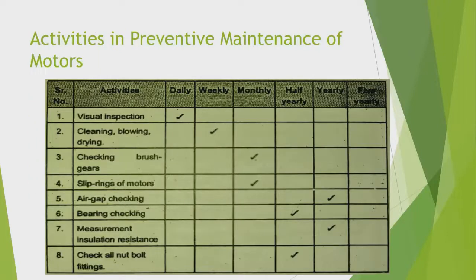Activities in preventive maintenance are scheduled as daily, weekly, monthly, half-yearly, yearly, and five-yearly. Daily: visual inspection, cleaning, blowing, drying. Weekly: checking brushes and gears. Monthly: checking slip rings of motor and air gap. Yearly: gearing check, measurement of insulation resistance, and checking all nuts, bolts, and fittings.